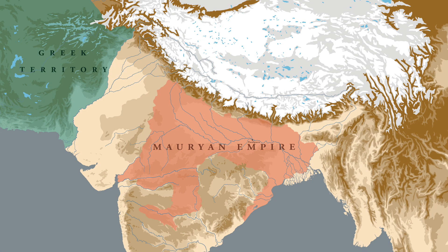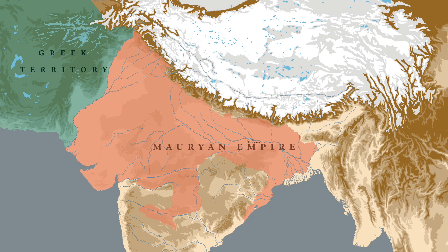Having secured his heartland, Chandragupta now focused his attention on the western part of the Indian subcontinent. This region was in a state of flux after the invasion of Alexander, and for Chandragupta this was a unique opportunity to conquer more territory. By 313 BC, he was able to conquer most of the western part of the Indian subcontinent. Having conquered these territories, the Mauryan empire now touched the Seleucid empire.